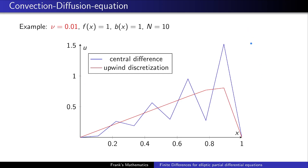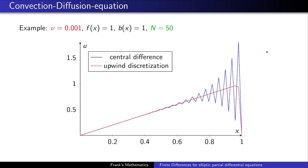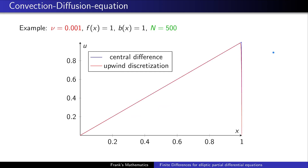The difference becomes even more dramatic at ν = 0.001: the central difference produces garbage, while the upwind discretization gives a very reasonable result even with few discretization points — showing a strong wind from the left and a steep drop at the right. As n increases to 50, 100, and 500, the upwind scheme stays stable throughout, and for n = 500 both solutions are nearly identical.